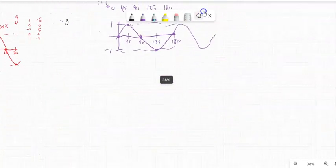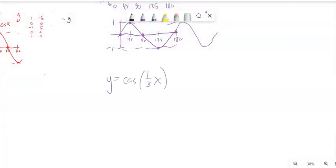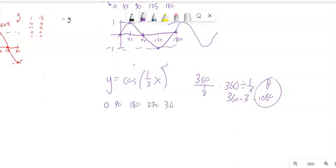Let me do another example like this. Y equals cosine of 1 third x. So now that 1 third is going to slow it down. In other words, if I take 360 and divide it by 1 third, 360 divided by 1 third. That's the same as 360 times 3. And let's see, 360 times 3 is 1080. So this is going to have a period of 1080. So here's what I can do is I can take my originals, 0, 90, 180, 270, 360, and divide them all by 1 third.